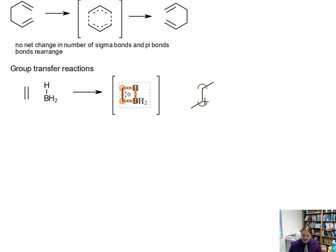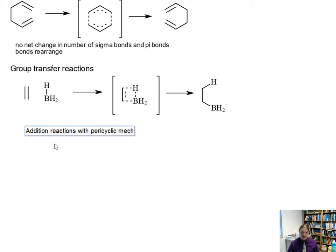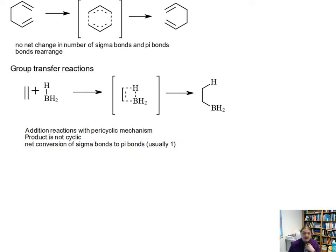It's an addition reaction like the cycloaddition reactions, but it's not a cycloaddition reaction. These kinds of reactions are addition reactions with pericyclic mechanisms. But unlike the cycloaddition, the product is not cyclic. There usually is a net conversion of pi bonds to sigma bonds. So there is a net conversion of one pi bond to one sigma bond in this structure.